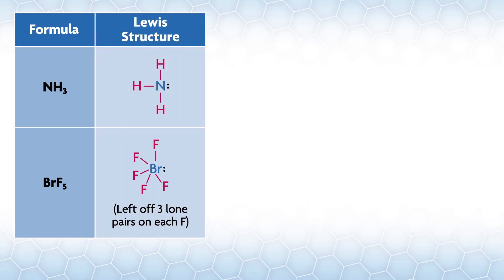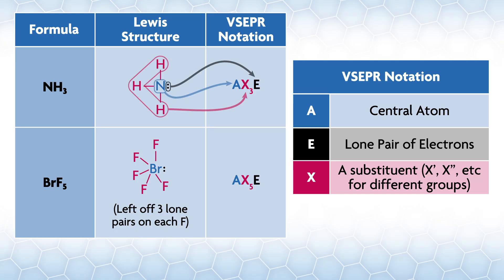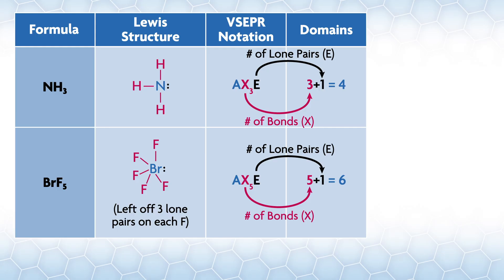The notation for VSEPR looks like this: A is a central atom, E is a lone pair, and X is a substituent. Here are a couple of examples with ammonia and BrF5. Start with a formula for a molecule, draw the Lewis structure, then determine the VSEPR notation. For ammonia we have a lone pair and three X groups (hydrogens), so the notation is AX3E.